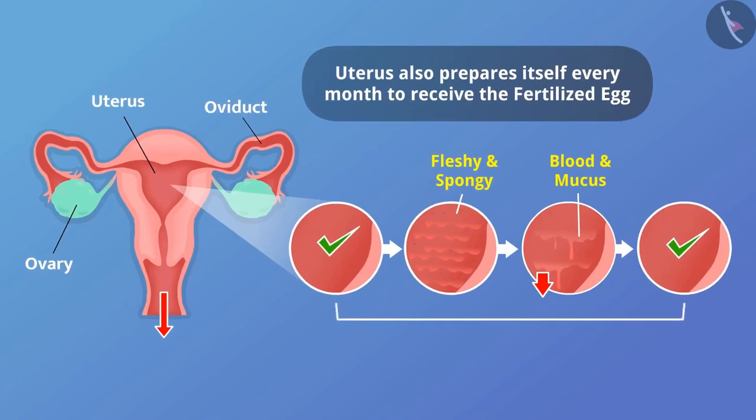This entire process is completed in about 2 to 8 days and is repeated almost every month. This action is called menstruation.